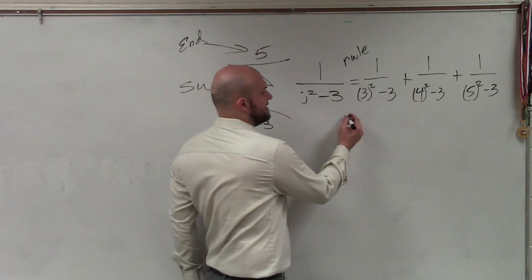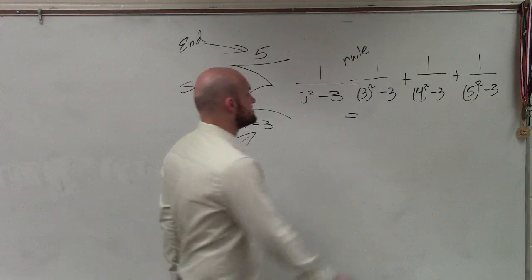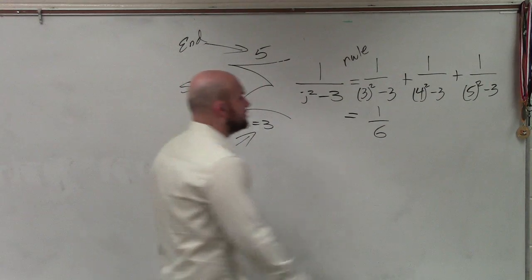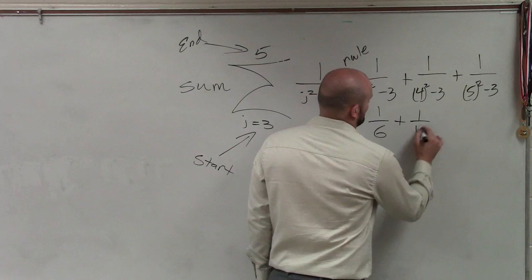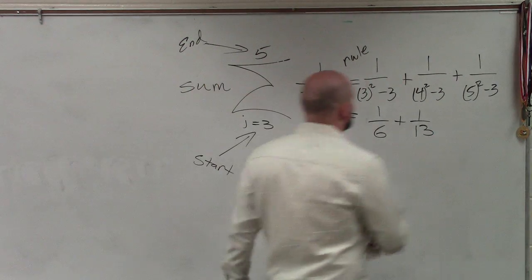So now let's go and simplify these. This is 1 over 9 minus 3 is 1 sixth. 1 over 16 minus 3 is 1 thirteenth. 1 over 25 minus 3 is 1 twenty-second.